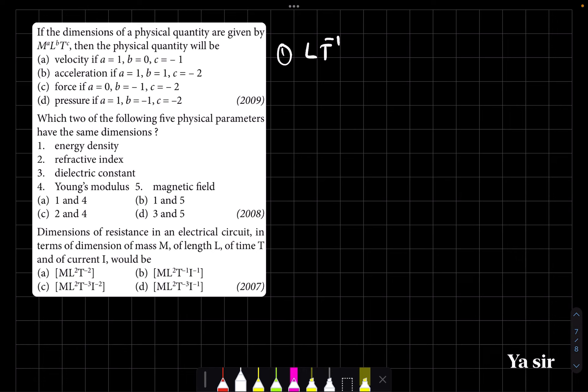Acceleration again a equals 1, that is why I am removing that also. Force a equals 0, that is wrong. Then pressure a is equal to 1, so m raised to 1, l raised to minus 1, t raised to minus 2. This is correct.